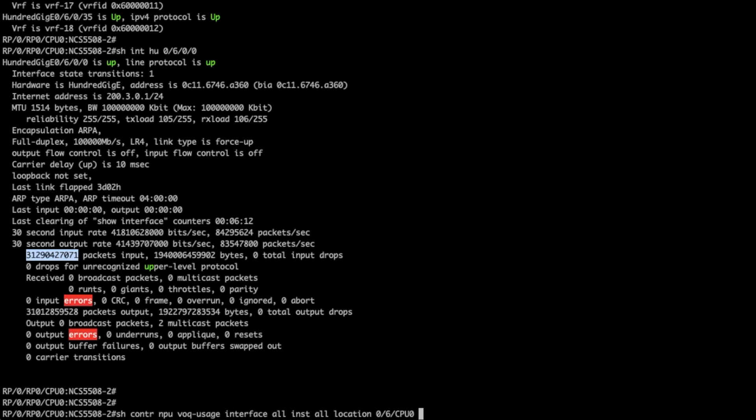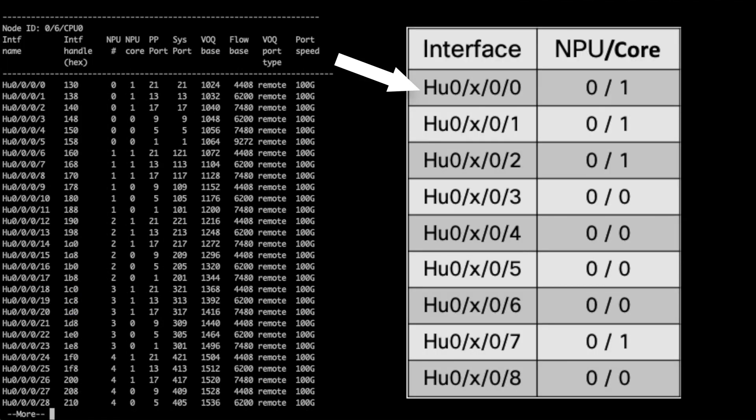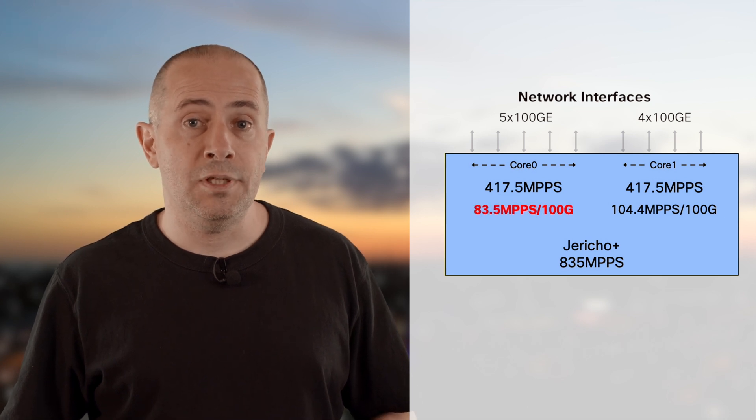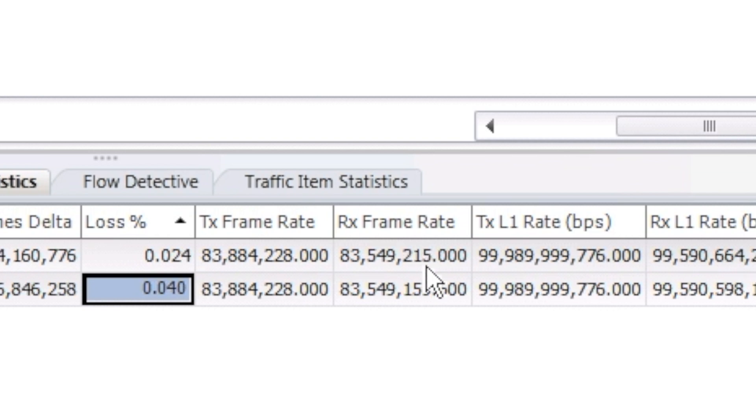A snake topology is actually not ideal to measure the NDR with precision. On these routers, you have 9 ports per NPU, and each NPU is made of 2 cores — so logically one core will have 5 ports while the other will have 4. This show command can display the port allocation. Each core is capable of 417.5 million packets per second. Divided by 5, that's 83.5 MPPS per 100 gig port — which is indeed what we measured. The performance of the 4-port core would have been 104 MPPS, but that's something we cannot demonstrate with this topology.